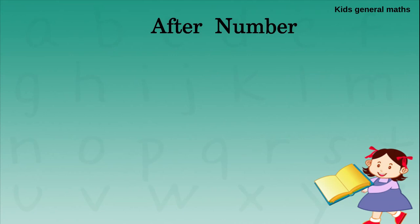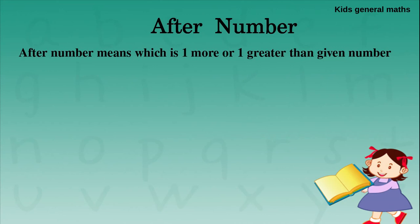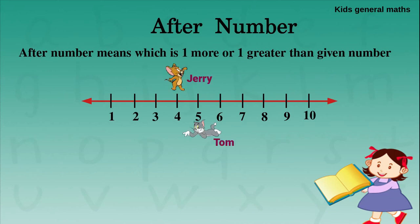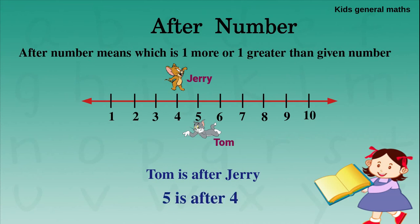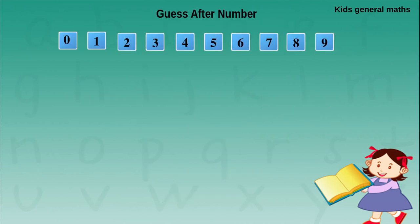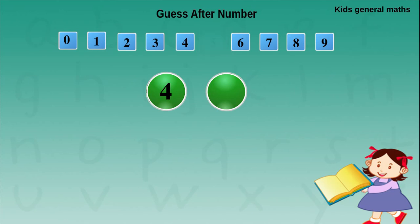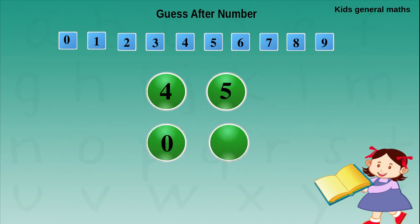Next we are going to find the after numbers. So what is an after number? A number which is 1 more or 1 greater than the given number. In the number line, Tom and Jerry are standing. Jerry is standing on number 4 and Tom is standing on number 5. Tom is after Jerry — that is, 5 is after 4. Now we are going to guess some after numbers. They give 4, so after 4 is 5. Next, 0 — after 0 in the number line is 1. So after 0 is 1.